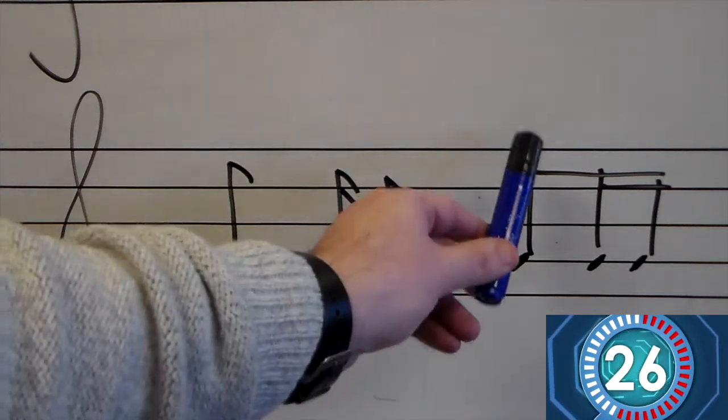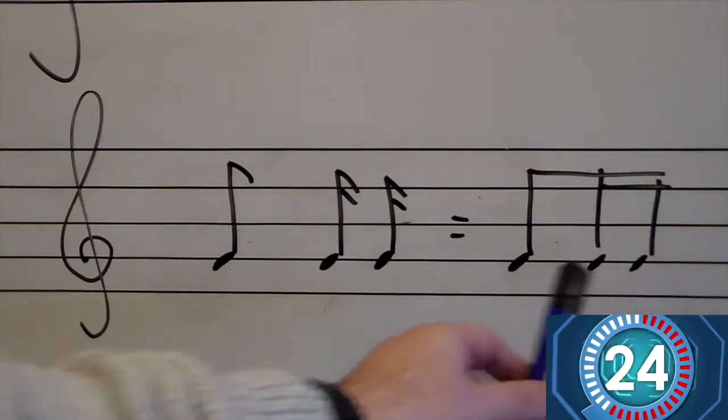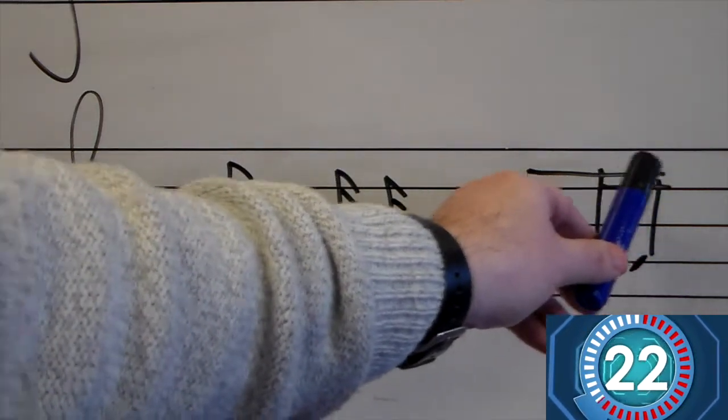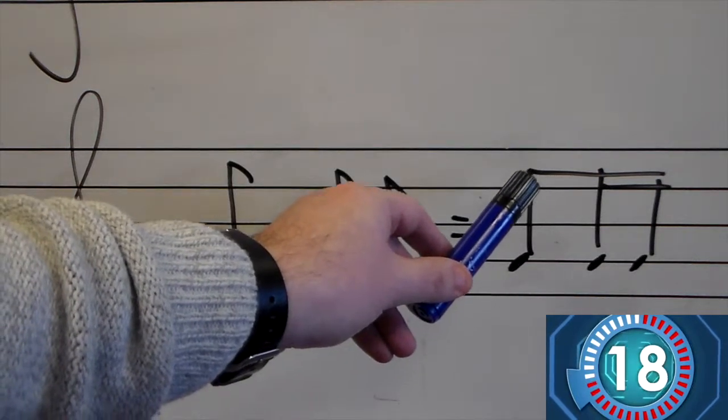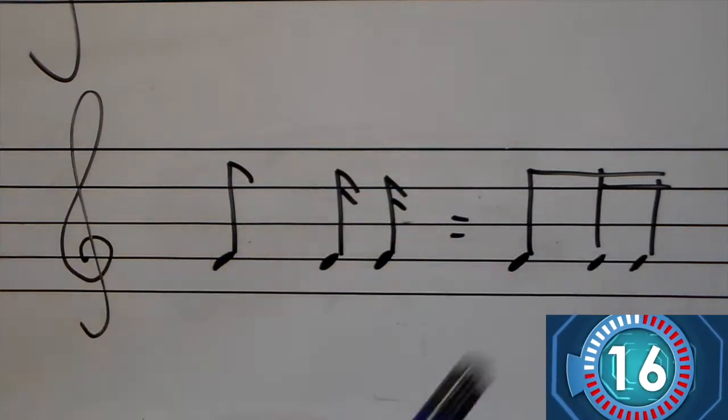Look how I have to do it. I have the three stems of the notes. Now the two sixteenth notes have a double beam, but the eighth note only has a single beam. So that is eighth note followed by two sixteenth notes.